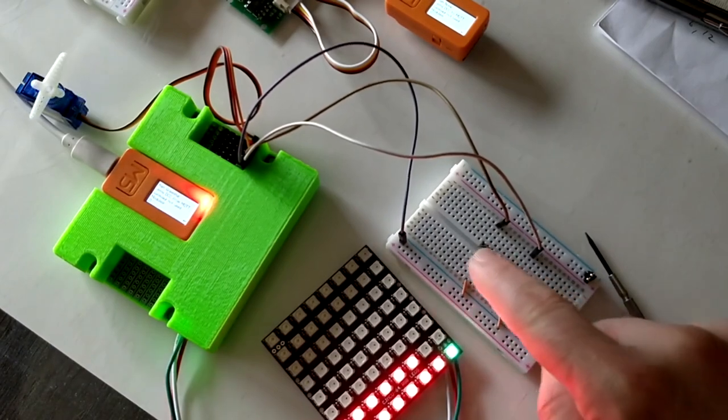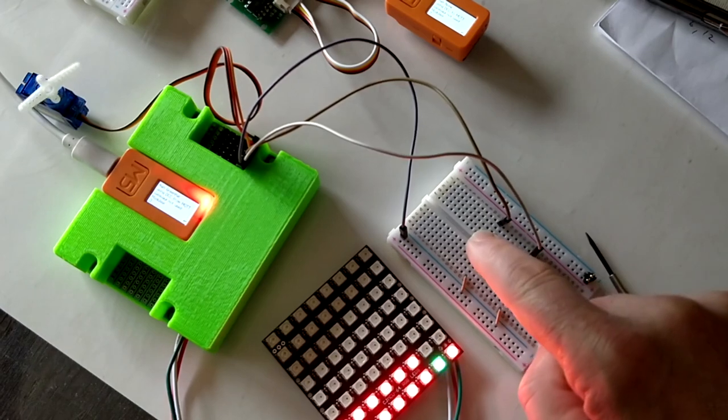Of course, since DCC is unidirectional, any input buttons will not work in this mode. Well, that's wrong. They can still work as local input buttons to set the turnout, but the input information will not make it to the command station in this case.